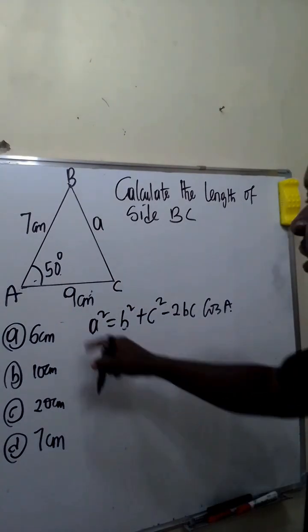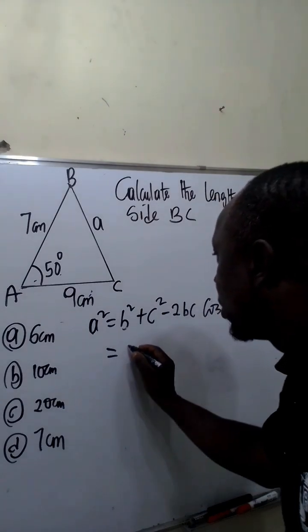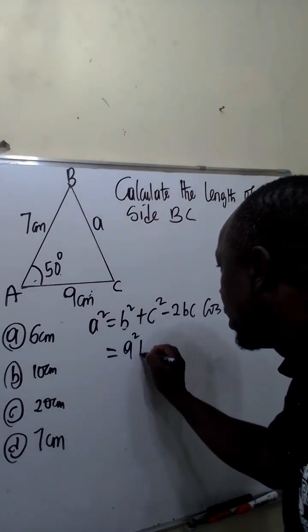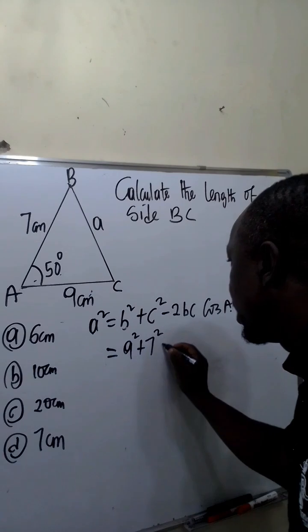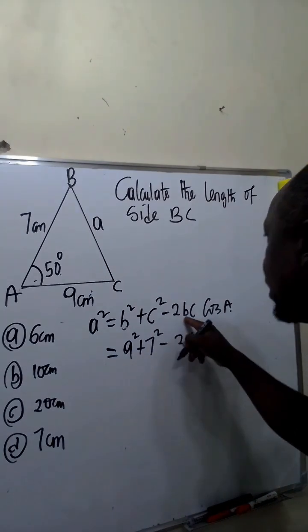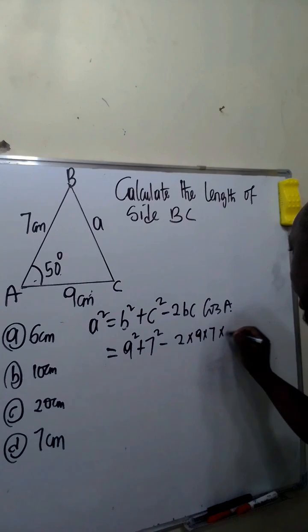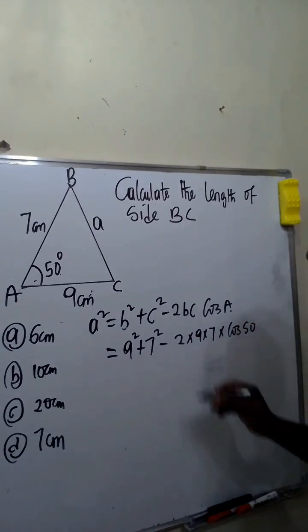Let's include these values to get this side. A² will be equal to 9² + 7² - 2 times our B is 9 times 7 times cos 50.